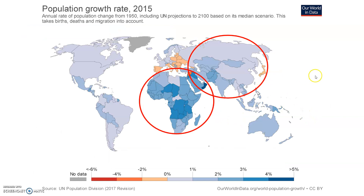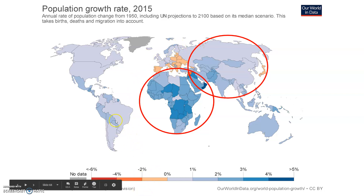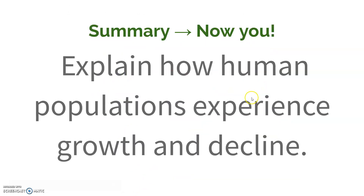As far as human population dynamics in the future, we're going to see the most population growth happening in Africa and Asia, because currently they are the continents with higher growth rates. We'll see more of a decrease in countries like Europe, where many of them have a population growth rate below zero.